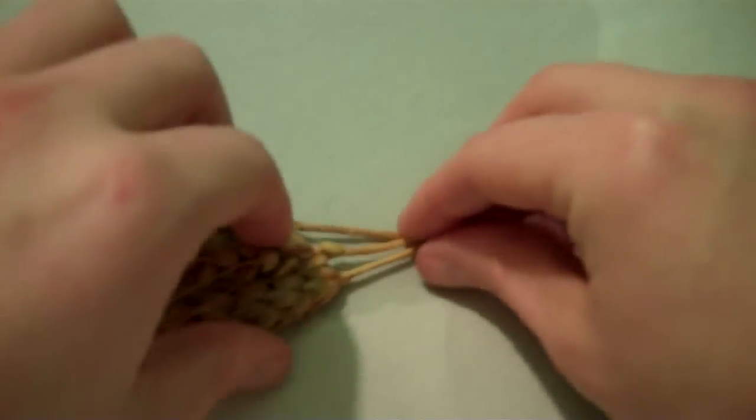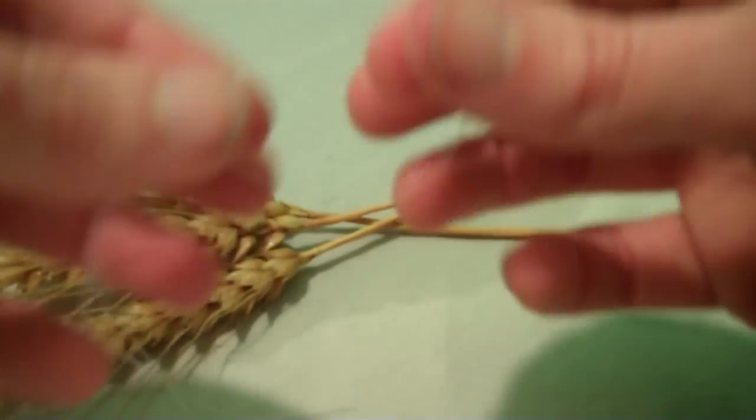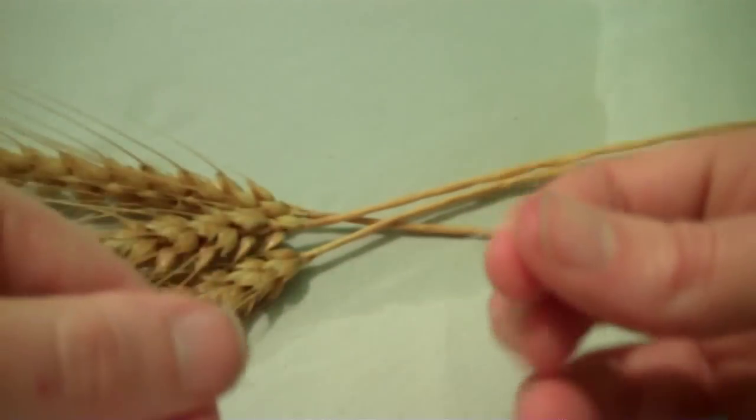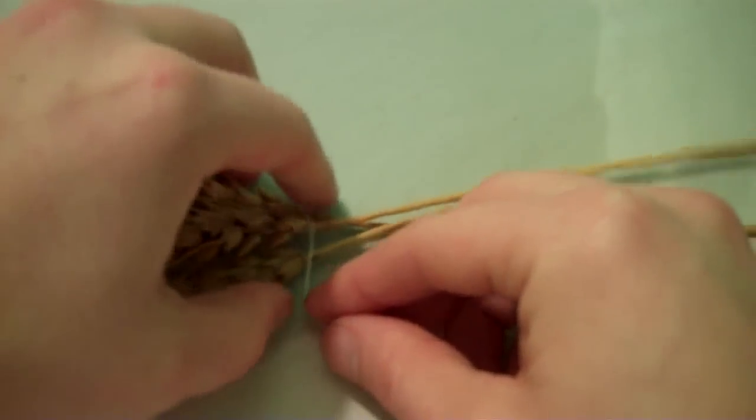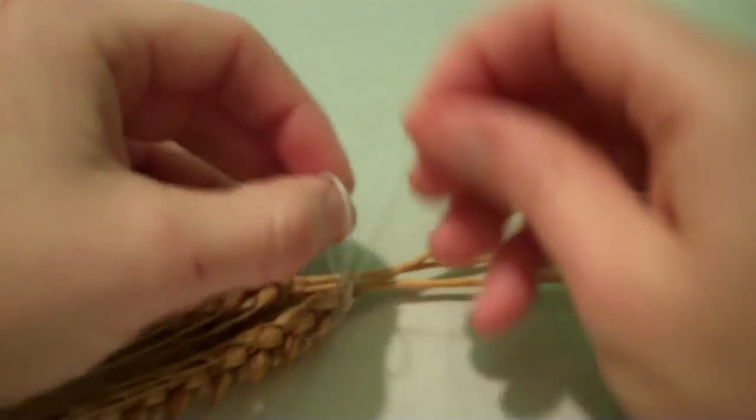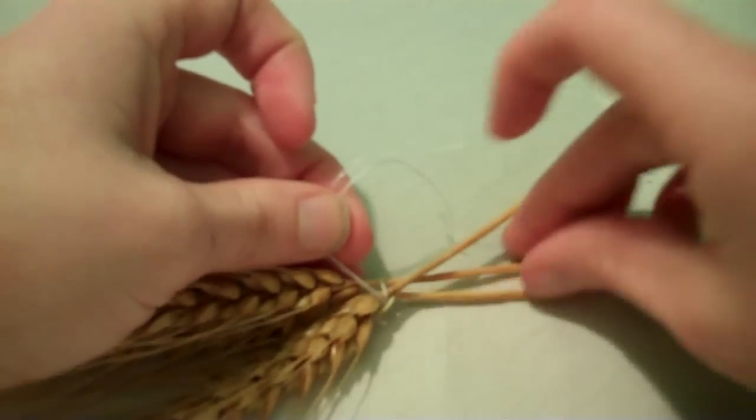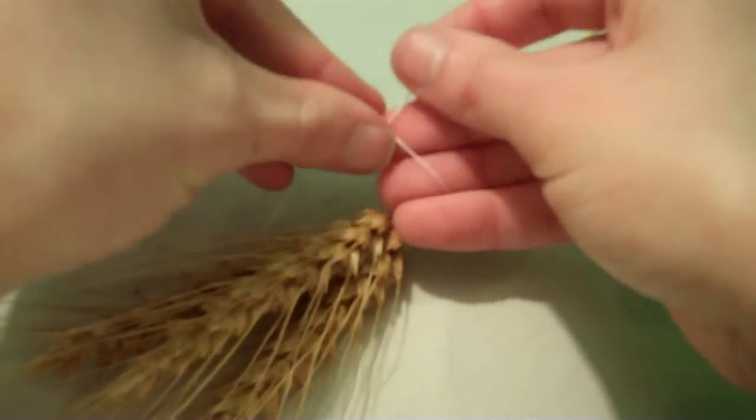So once your straws are ready, you'll have to tie the heads together for most designs. The best way to do that is to take a piece of thread and fold it in half so you get the double layers. Then what you'll do is just wrap it right around the heads. Wrap it around twice. Then just kind of even out the heads by pulling the stems so that all the heads are even right up at the top.